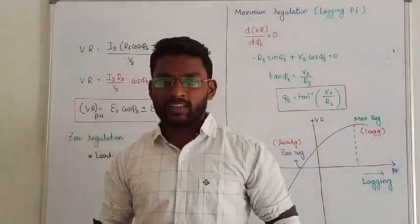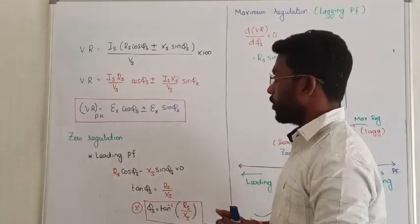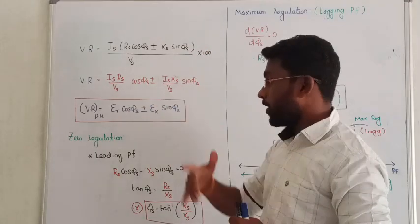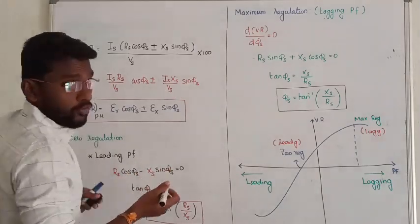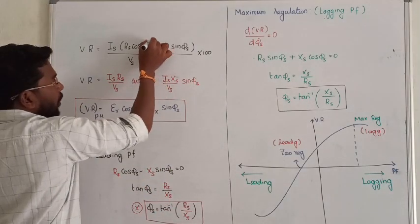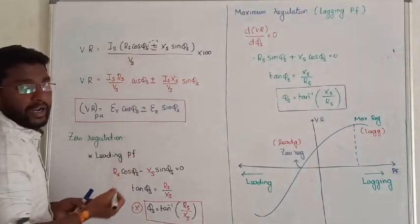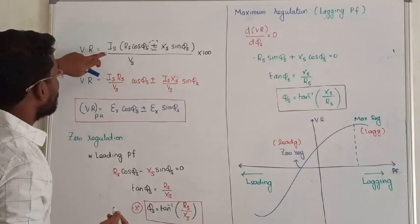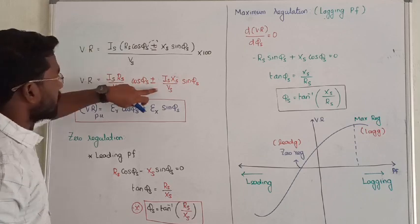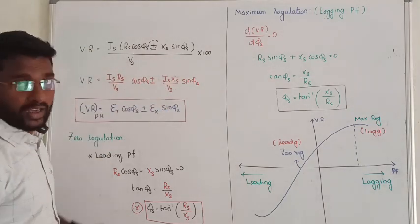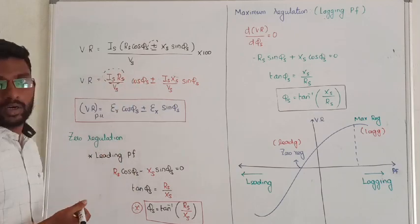Hello friends, so in the last lecture we saw voltage regulation. So next, what is the voltage regulation? I told you, voltage regulation has two power factors. For lagging power factor you have to keep plus, for leading power factor you keep minus. So let me multiply: the formula is Is times Rs divided by Vs, plus or minus Is times Xs divided by Vs. This is called the actual voltage drop.